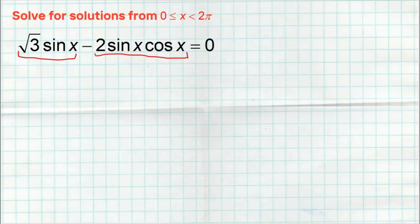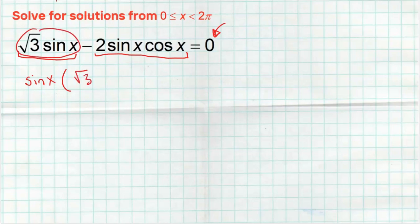Don't ever try to factor unless you already have a zero on one side. You need to get that zero first, then you can go ahead and factor. So what do both of these terms have? They both have a sine of x in common, so I can factor it out. When you factor out, you divide it away. So if I take this first term and divide away a sine of x, I'm left with a square root of three. And the second term, if I divide away the sine of x, I'm left with minus two cosine of x equals zero.